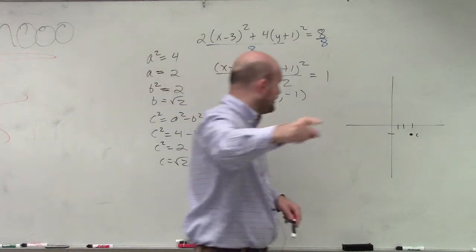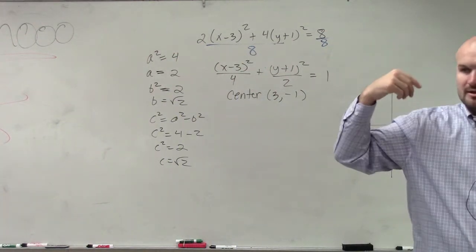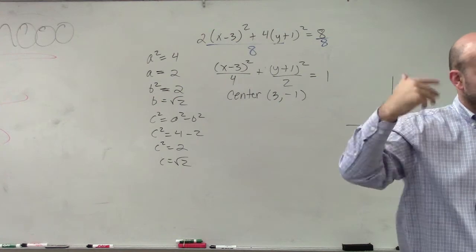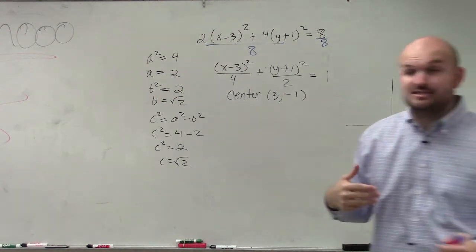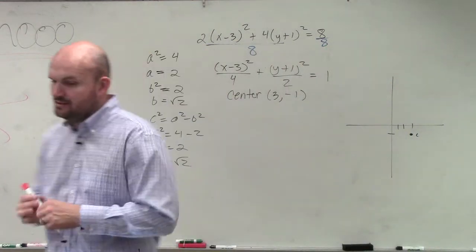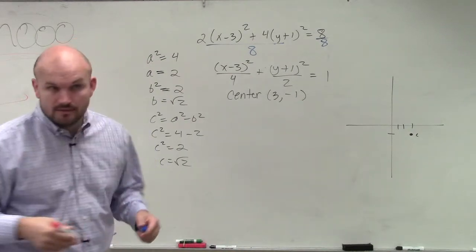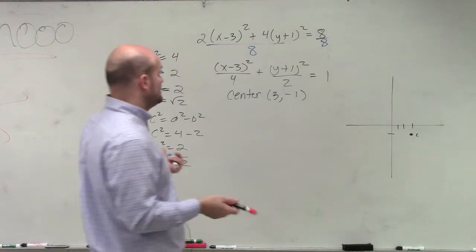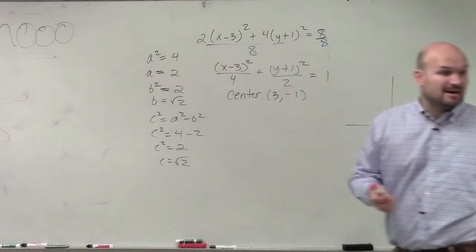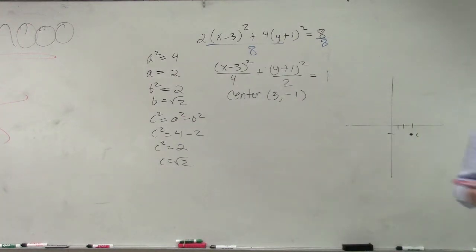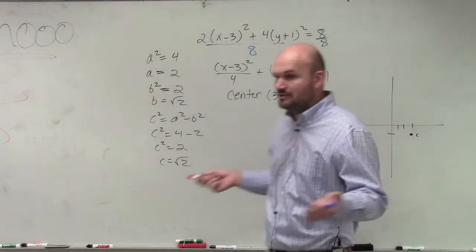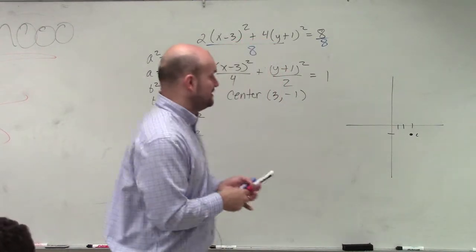Now, Tim, your comment last problem. Whatever my A is, that tells me where the major axis is, right? Horizontal or vertical. So my A squared is under what coordinate here? My A squared is under which coordinate here? My X. So therefore, should I have a major axis horizontal or a major axis vertical? Horizontal. It's opposite of the last problem we did.